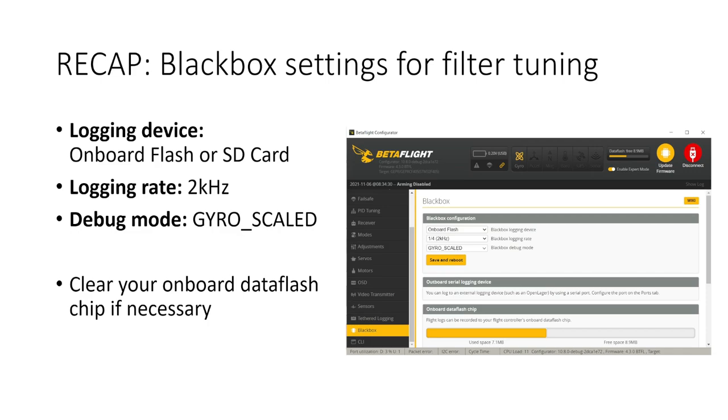Now if you have black box logging and you want to use those logs to help you with your filter tuning then you'll need the right settings. You should set the logging device to onboard flash or SD card depending on what you prefer to use and the logging rate should be set to 2 kilohertz. The debug mode needs to be GYRO_SCALED and you need to make sure that you have enough space on your onboard data flash chip or your SD card to store the logs. If your data flash chip is already full which it probably will be if you've been doing some flying then there's a button to erase that in the black box tab of the configurator.